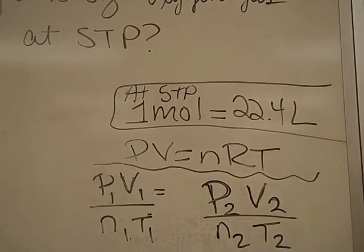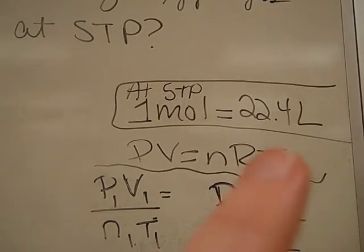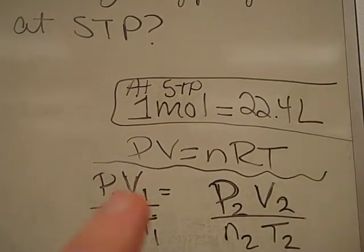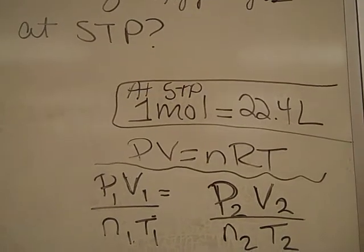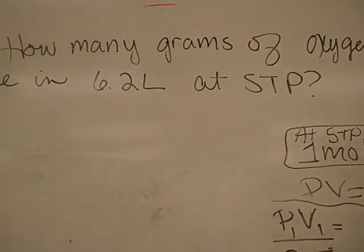We're going to try solving it both ways just to prove the fact that we can use this shortcut, but if you don't remember that relationship, you can still do PV equals nRT, as long as you remember what the standard temperature and pressure are.